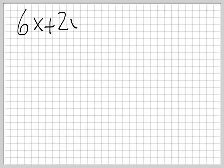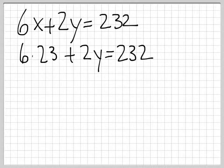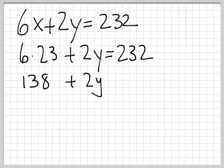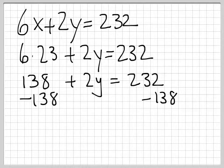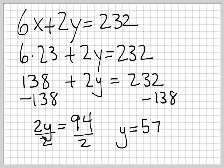So let's plug it into the second one. 6x plus 2y equals 232. We just saw that x was 23. So we take 6 times 23 plus 2y equals 232. And that gives us 138 plus 2y equals 232. Subtract 138 and we get 2y equals 94, divide by 2. And we get y equals 47.